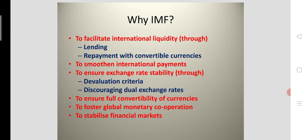Another purpose of the IMF is to ensure exchange rate stability, which is required for the free flow of goods, services, and capital. The current account and capital account of the balance of payments of all nations have to be smoothened. If there is a huge fluctuation in the rate of exchange, uncertainty will rule. The IMF has its own devaluation criteria and discourages the adoption of dual exchange rate systems, which previously existed in several countries.